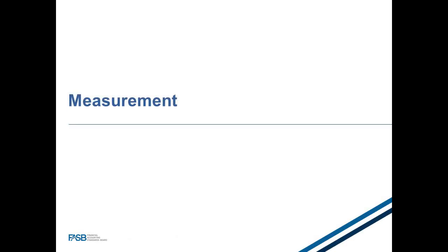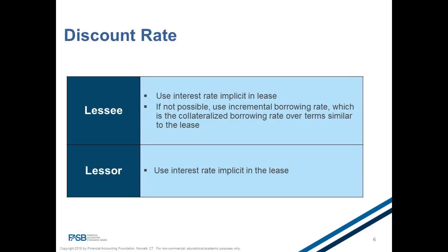What's the discount rate used to discount the present value of future minimum lease payments? A lessee should, if possible, use the interest rate implicit in the lease. If not, they should use their incremental borrowing rate — the rate of interest a lessee would have to pay to borrow on a collateralized basis over terms similar to those in the lease contract. A lessor would use the rate implicit in the lease itself.